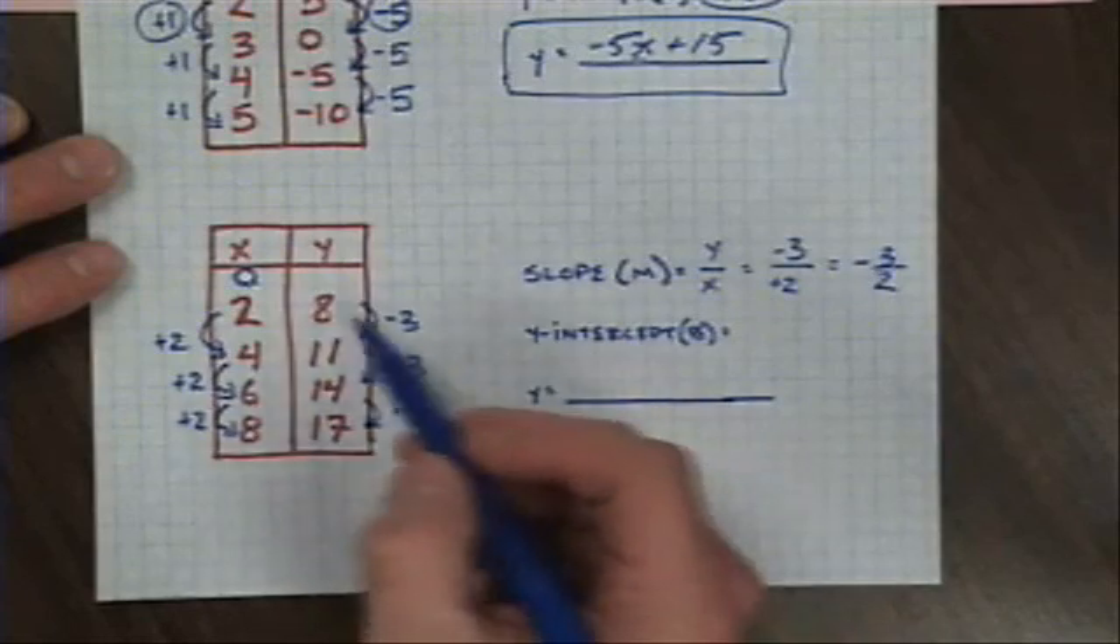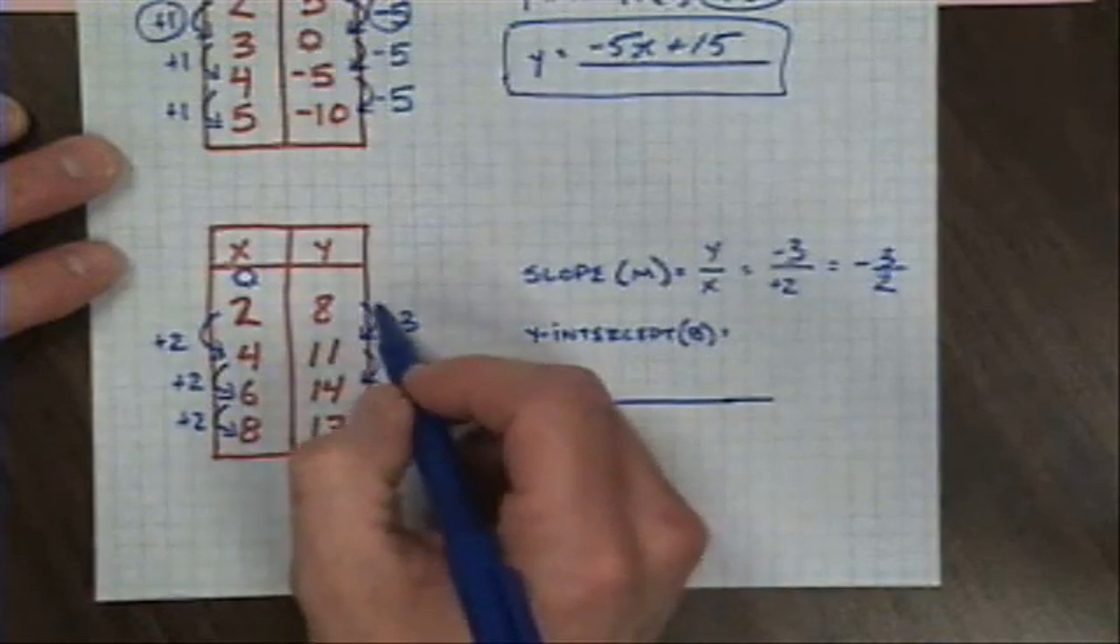So I'll do the same thing over here. 17, 14, 11, 8, take 3 more off. Oh, I realize I made a mistake here. These are going up by 3, which means I'm going down by 3 on the way back. 0 links up with 5, and I have a y intercept of 5.